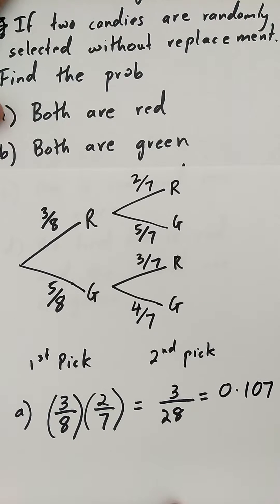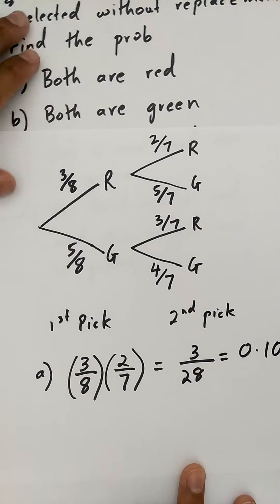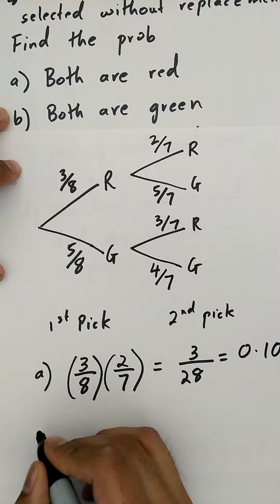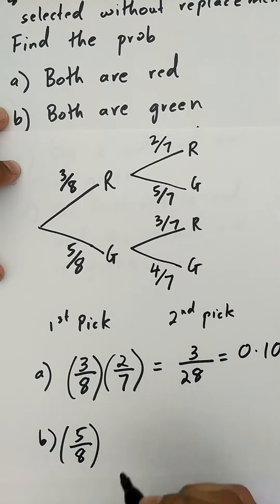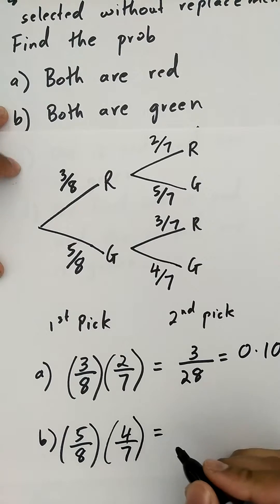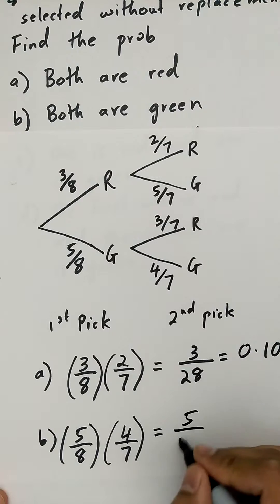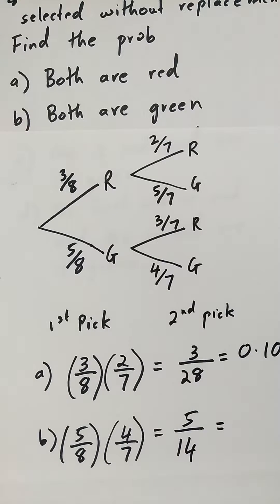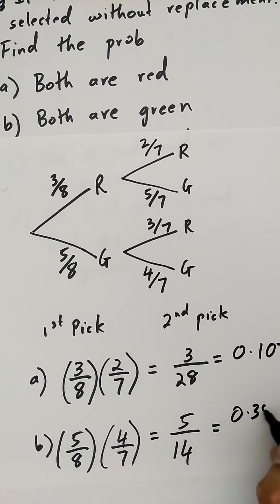For Part B, what is the probability that both are green? The probability of the first one being green is five over eight, and the probability of the second one being green is four over seven. Multiplying those together gives five over fourteen, which is also approximately 0.357.